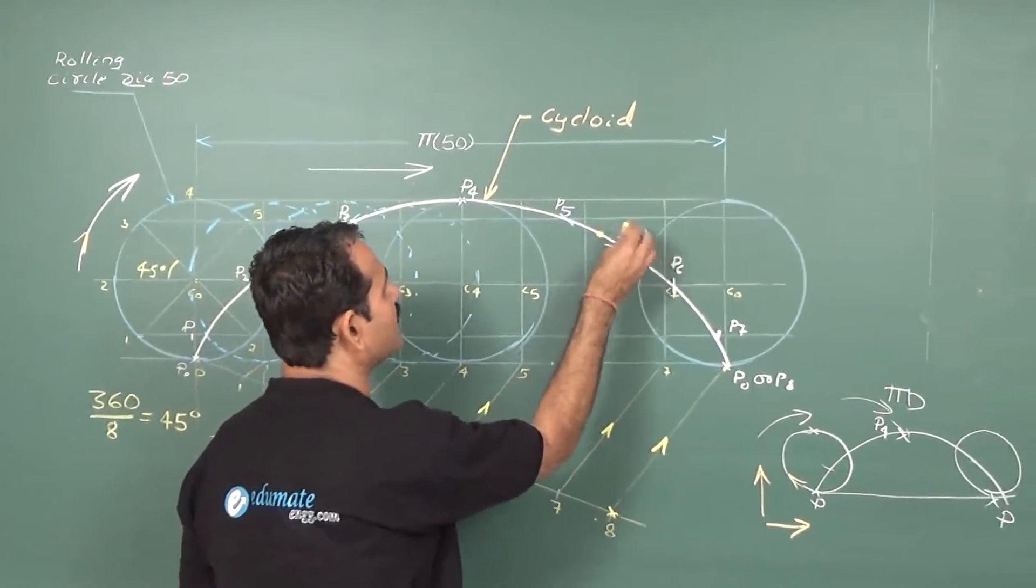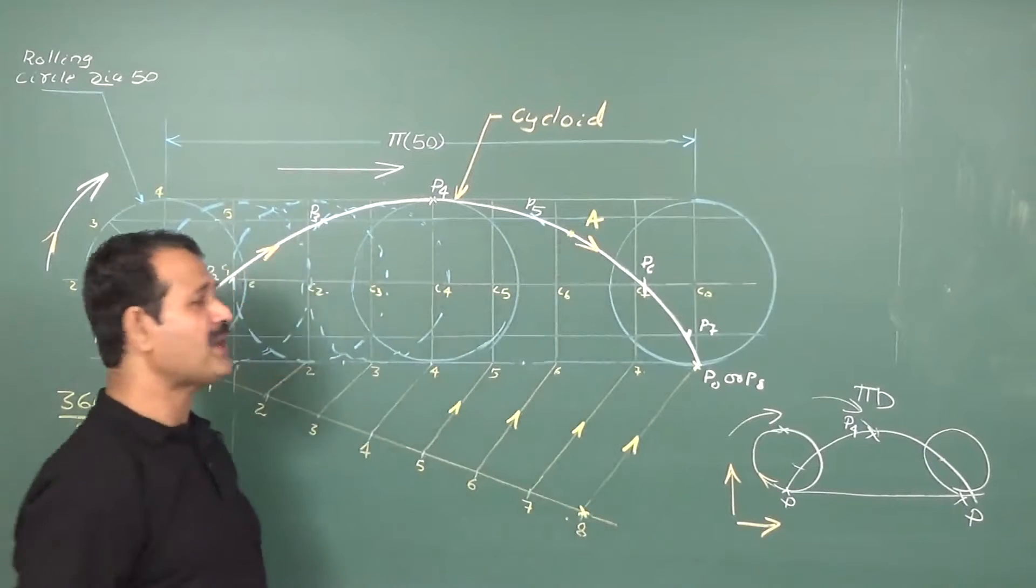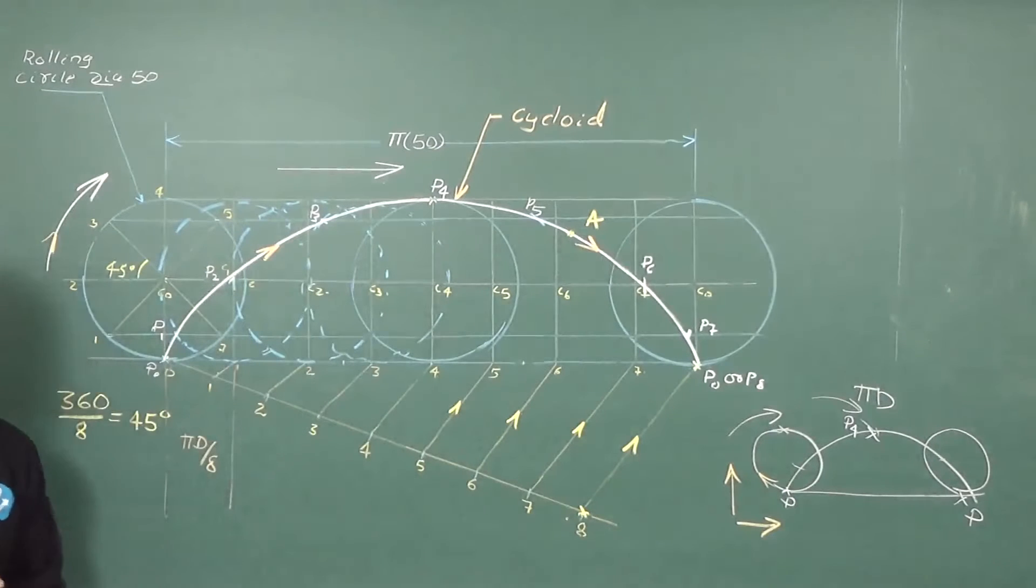At this point, let me take point A. At this point, I have to draw a tangent and a normal to the curve.